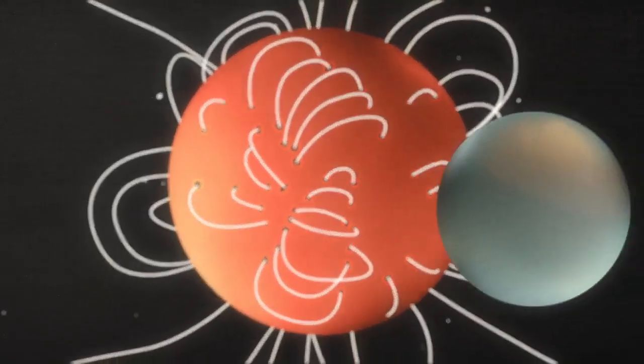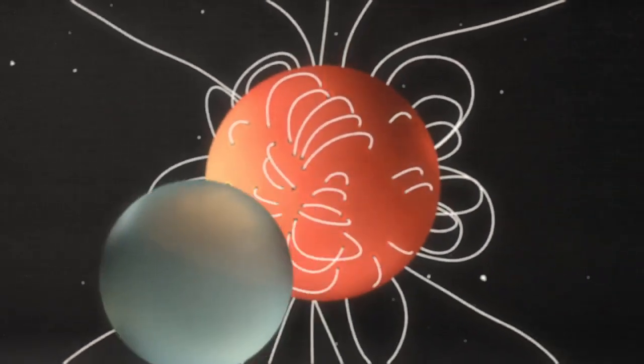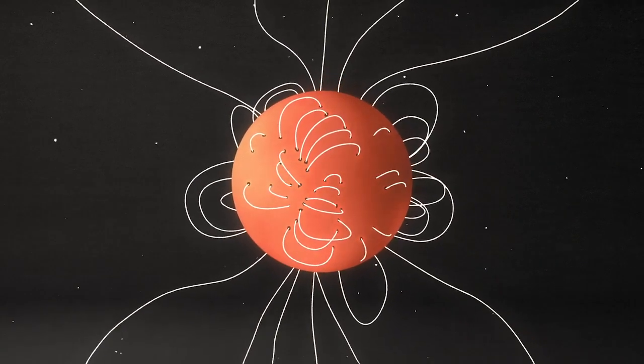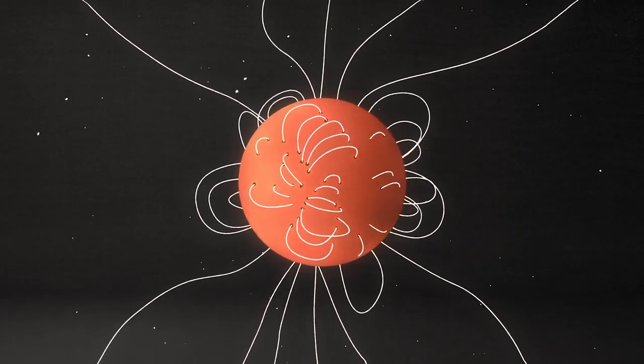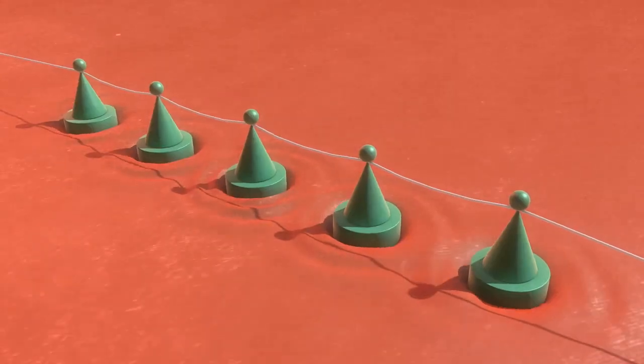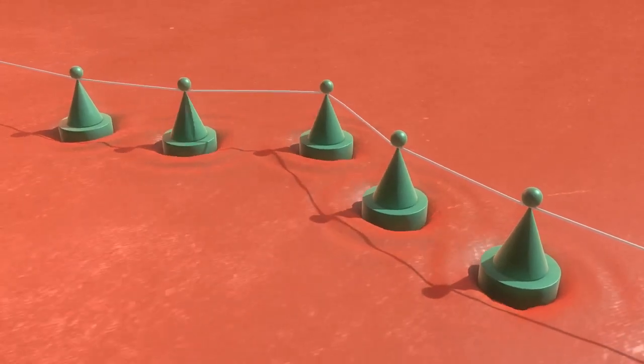Like Earth, the sun has a magnetic field with a north and south pole. But unlike Earth, the sun's magnetic field becomes extremely complex. This is because the sun is made of plasma, a charged gas that generates electric currents. As the sun rotates, plasma around the equator moves faster than near the poles.